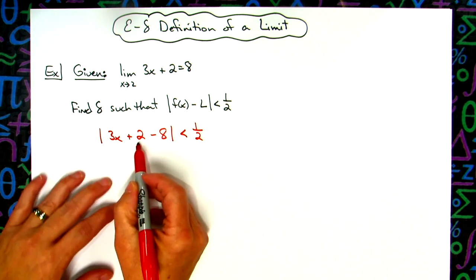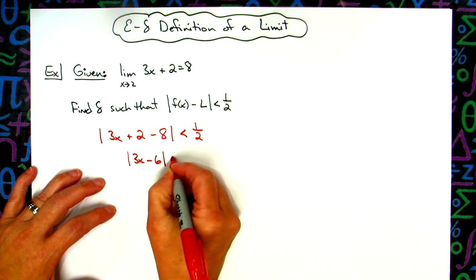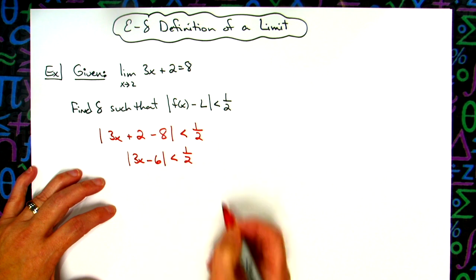Okay, I'm going to do some simplifying here in the middle. That two minus eight is going to give me absolute value of three x minus six is less than one half.